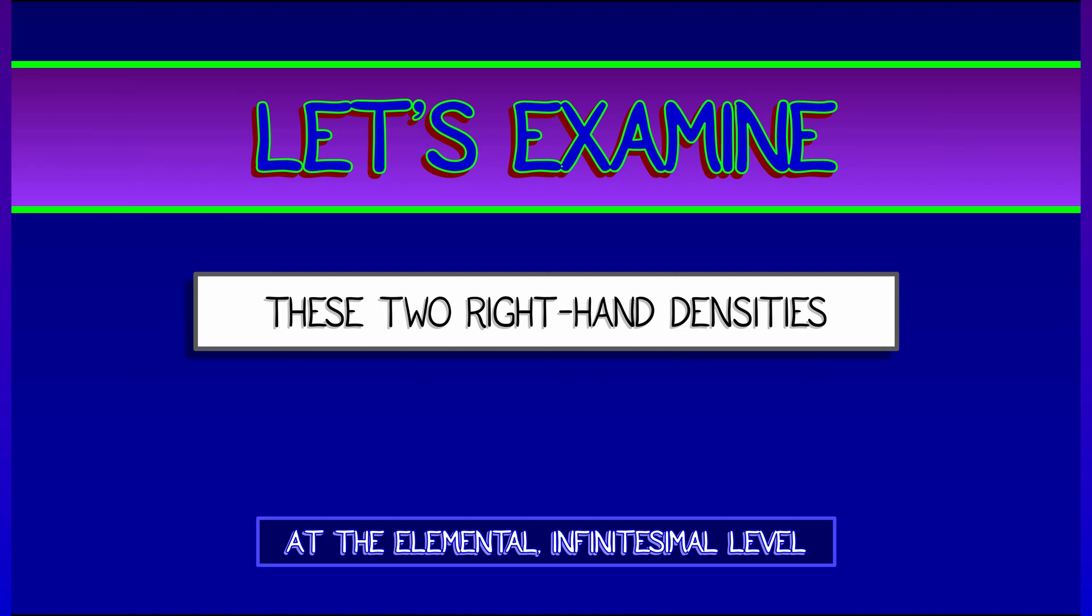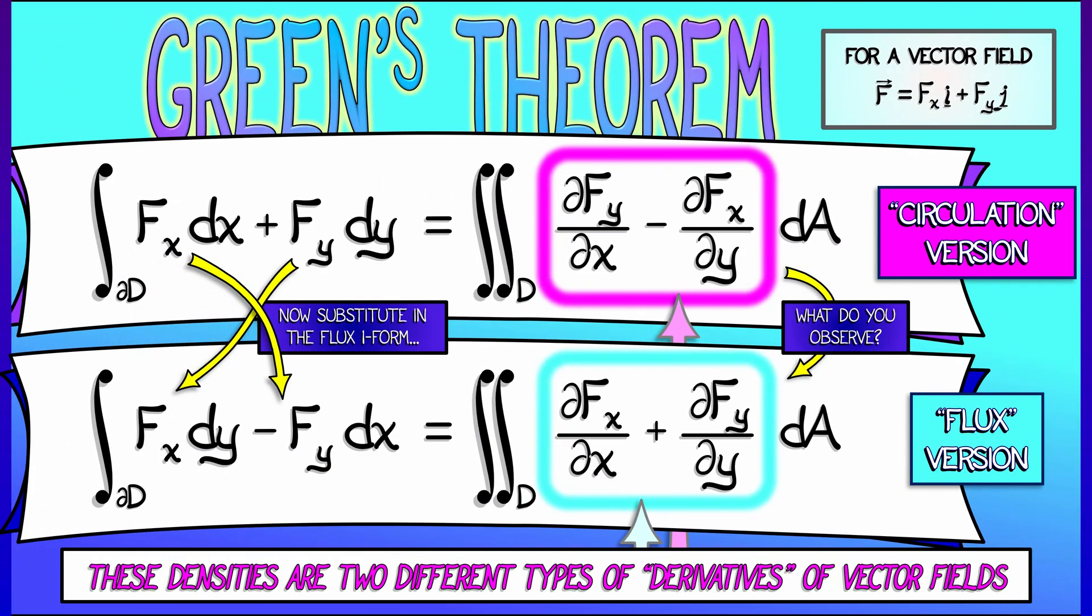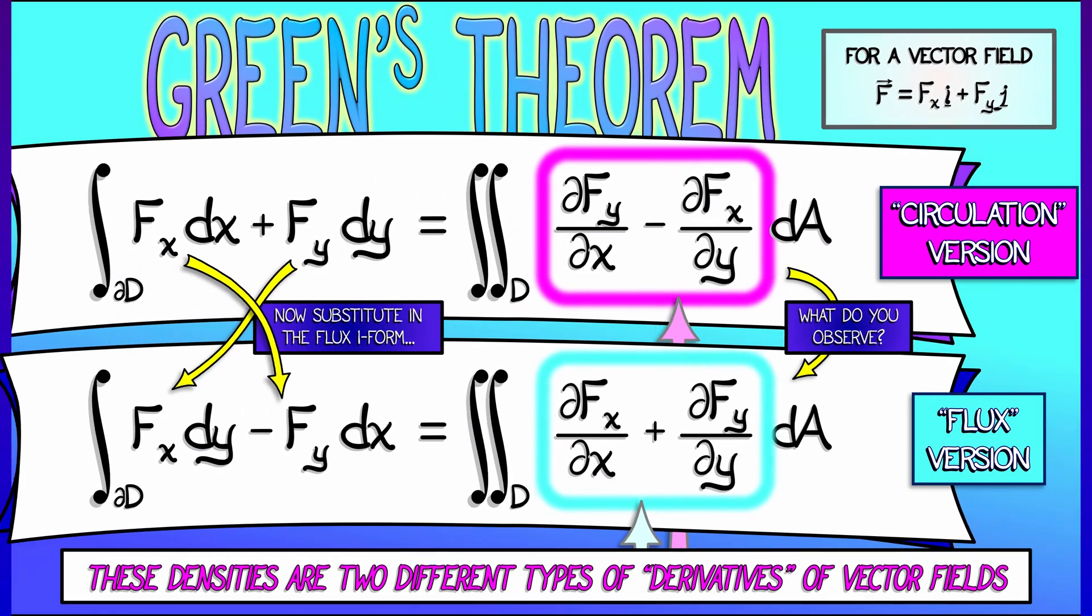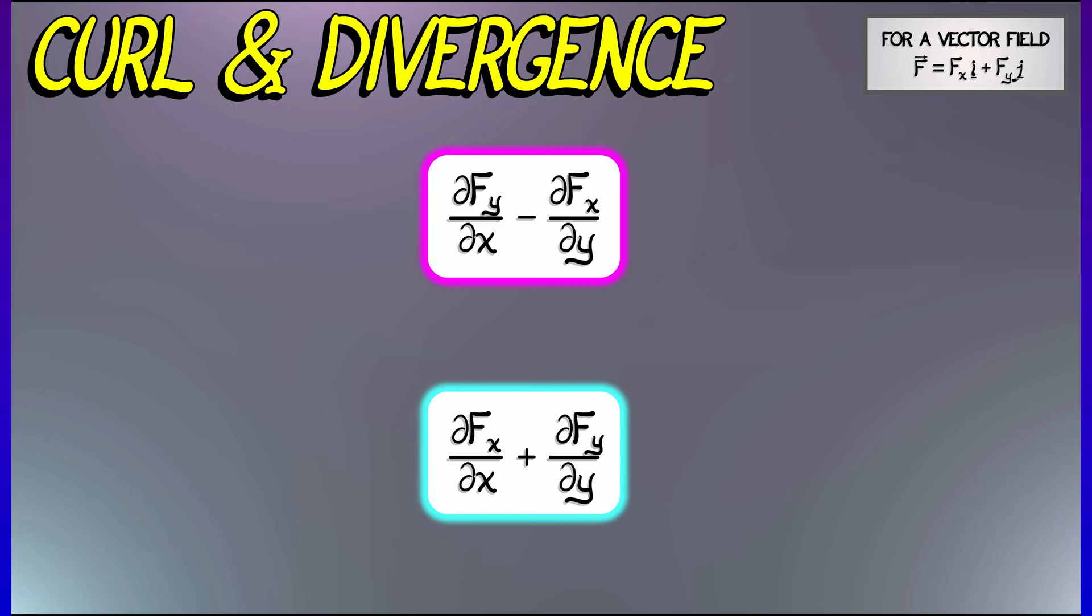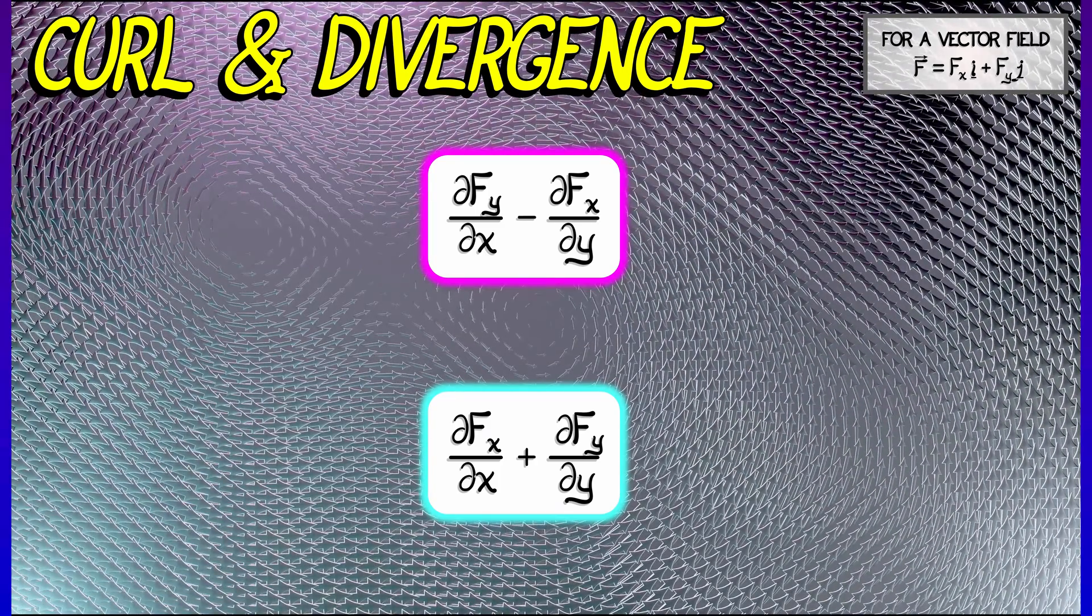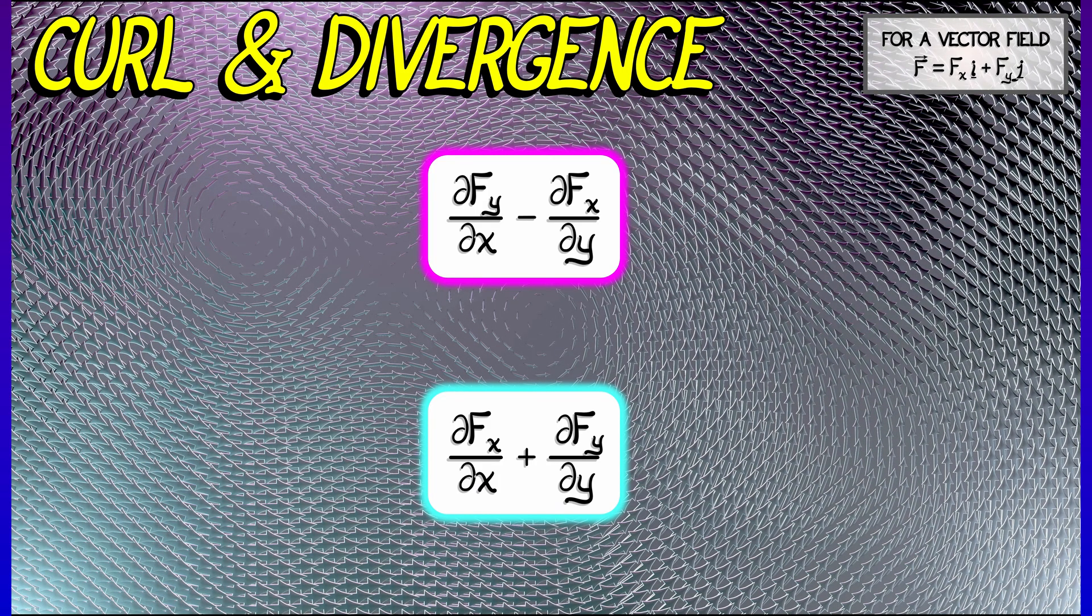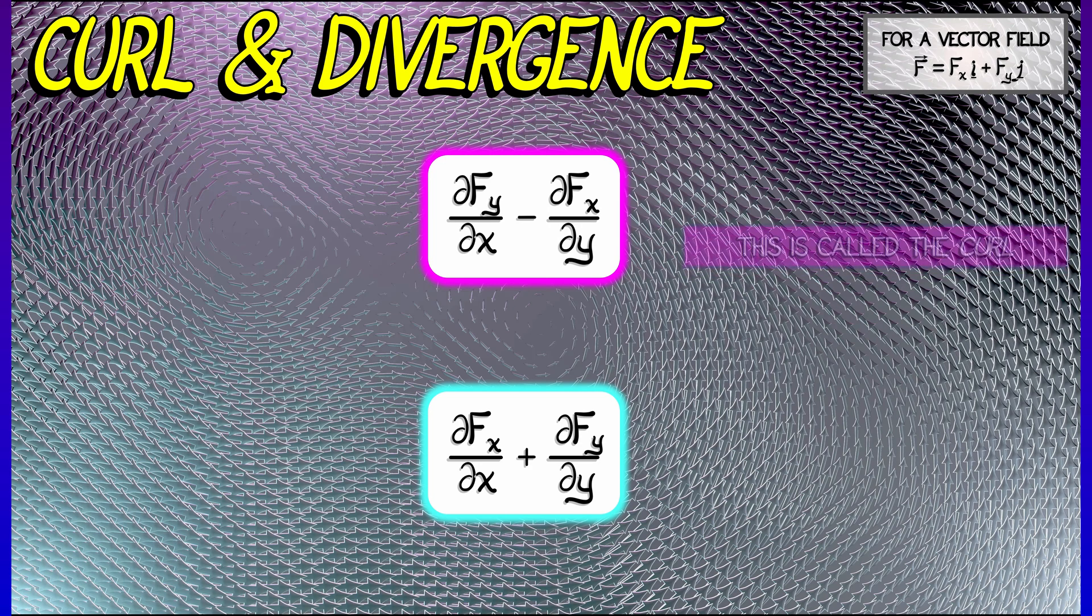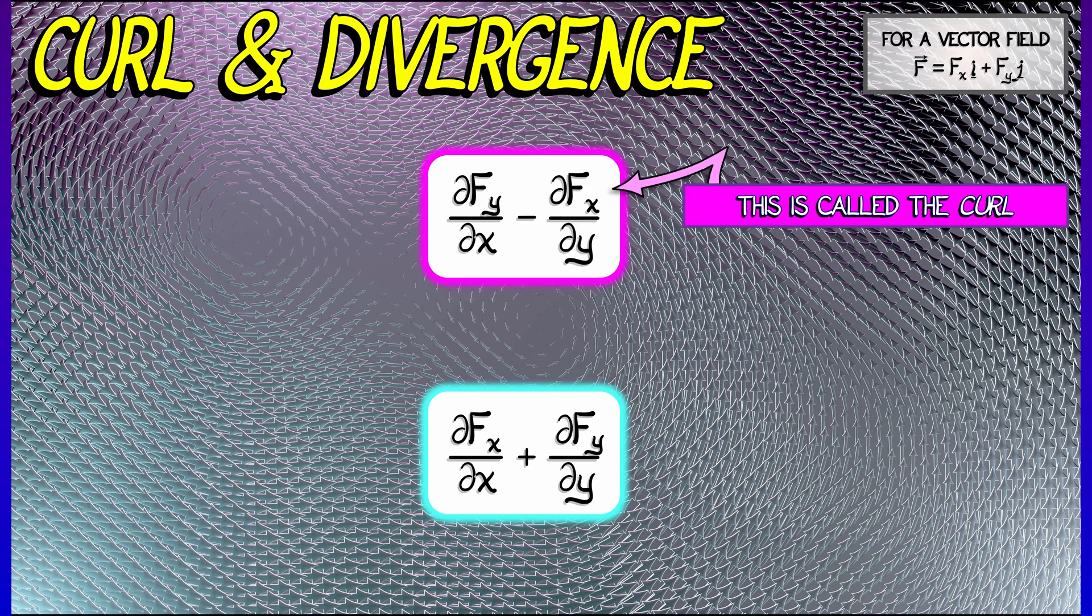Okay, so go back to Green's theorem. Take a look at those two densities and think about what they mean in the context of a planar vector field. Okay, so consider this vector field. And let's look at that first term. Partial fy partial x minus partial fx partial y. This is called the curl of the vector field.